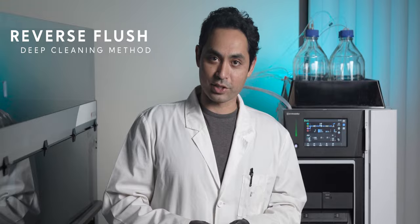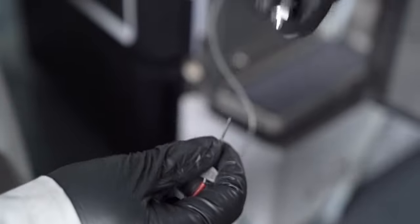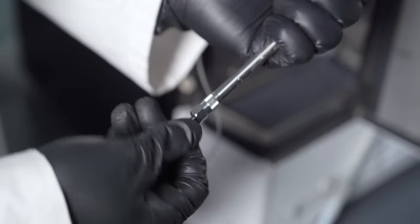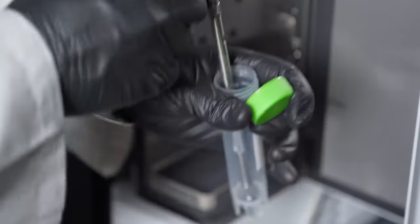If you feel like your column needs a deeper cleaning it would be best to do a reverse flush. You start by disconnecting the column at the low pressure end and then the high pressure end. Don't forget to remove the guard. Lastly, you flip the column around and you can flow into a container so you don't dirty your detector.